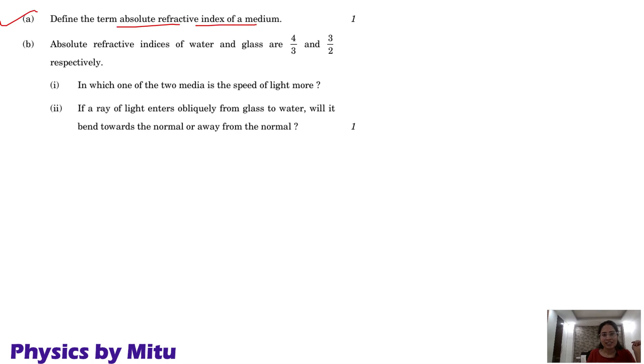Next is define the term absolute refractive index. Absolute refractive index of a medium is refractive index of medium with respect to air. That is absolute refractive index.